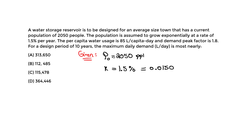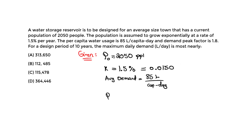The average demand is 85 liters per capita per day — this is the average value. The demand peak factor is 1.8; think of it as a safety factor we apply to find the maximum daily demand. And we have a design period of n = 10 years.